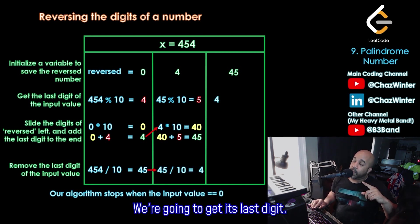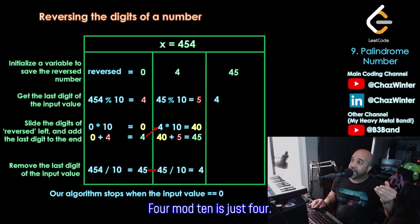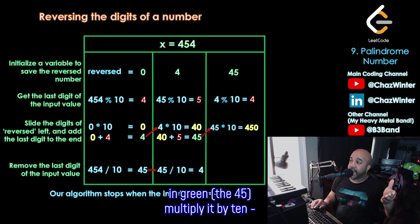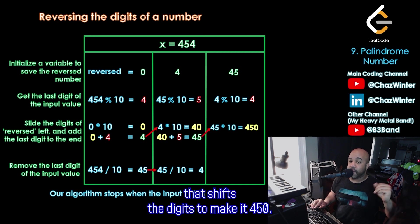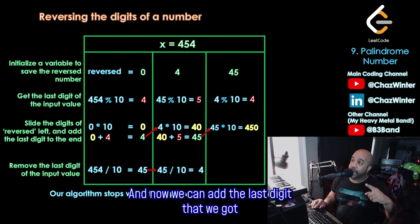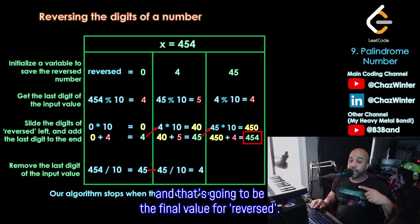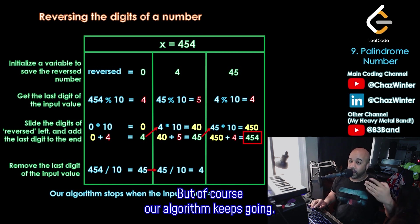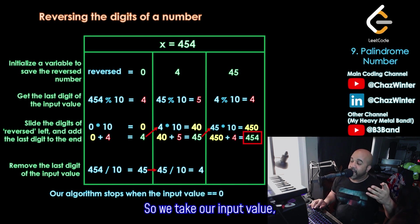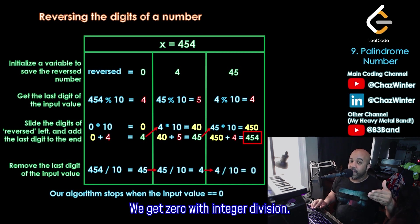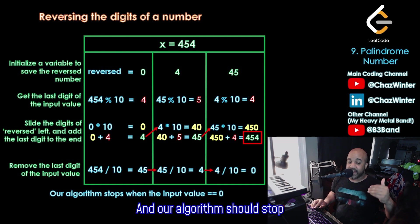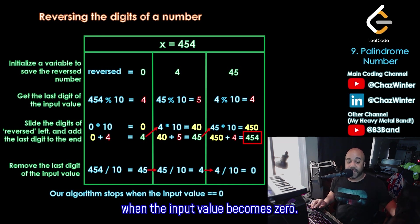Take that 4, move it up. We're going to get its last digit. 4 mod 10 is just 4. Take our reversed value in green, the 45, multiply it by 10. That shifts the digits to make it 450. And now we can add the last digit that we got from the previous step. The 450 plus 4 is 454. And that's going to be the final value for reversed. But of course, our algorithm keeps going. So we take our input value, which is now 4, divided by 10, we get 0 with integer division. And our algorithm should stop when the input value becomes 0.